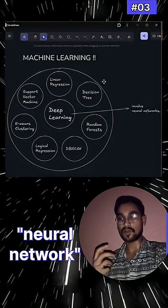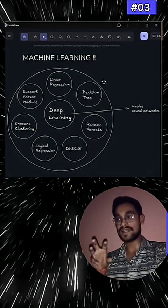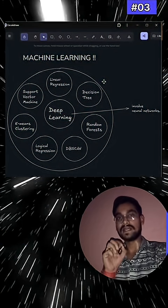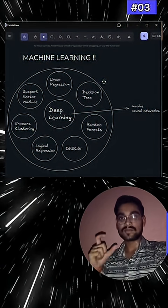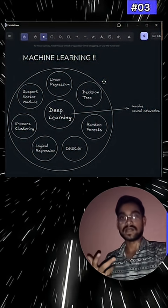But if you are using a neural network for a machine to generate its model, to train its model, to test its model, then that specific domain comes under deep learning. Deep learning is again a subset or sub domain of machine learning where the machine uses neural networks to learn by themselves.